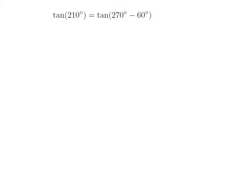As 210 degrees is equal to 270 degrees minus 60 degrees, so tangent of 210 degrees is equal to tangent of 270 degrees minus 60 degrees.